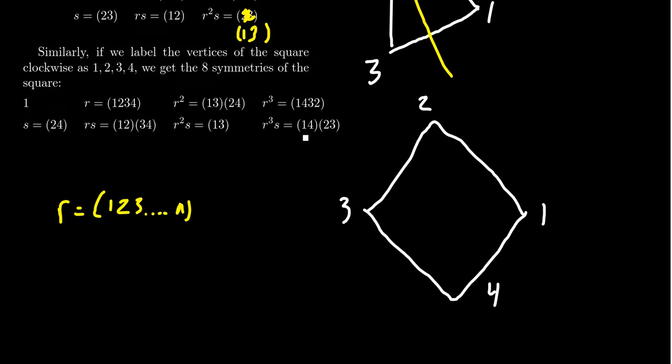For the square, if we take reflection across the horizontal here, 2 goes to 4, 4 goes to 2. So we get (2,4). If we do a double rotation, 1 goes to 3, 3 goes to 1, and 2 goes to 4, 4 goes to 2. So we get (1,3)(2,4). Triple rotation is just clockwise rotation: 1 goes to 4, 4 goes to 3, 3 goes to 2, 2 goes to 1, like we see right here.